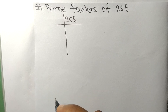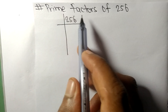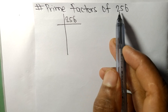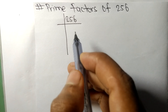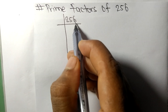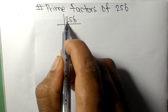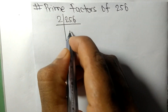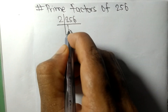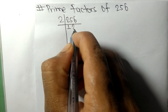Today in this video we shall learn to find the prime factors of 256. At last it contains the even number 6, so this whole number is divisible by 2. Two times one is two, two times two is four, and the remainder gives us sixteen.